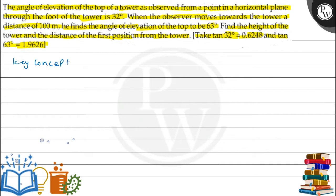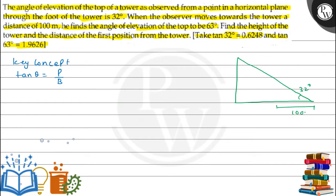First, let's talk about the key concept — we will use some formulas. Let's become a diagram. We have two angles of elevation of the tower. Here is the horizontal plane, and we'll draw the tower with the angle of elevation. We will draw triangle ABCD. So here we can see triangle ABD and ABC.